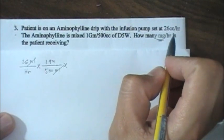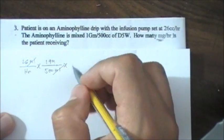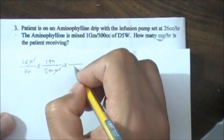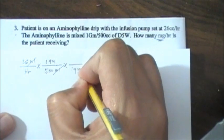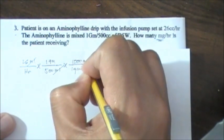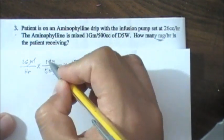So how many milligrams is the patient receiving when the patient is receiving 26ml per hour? We have to convert gram to milligram. So 1 gram is equivalent to how many milligrams? It is 1000 milligrams.